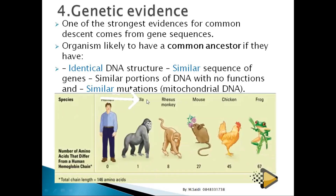This picture shows the percentage differences in genes between humans and other organisms. Humans compared to humans show 0% difference. Humans and chimpanzees show 1% difference; humans and monkeys show 8%. Humans and rats show 27% difference, indicating we diverged from rats much longer ago.